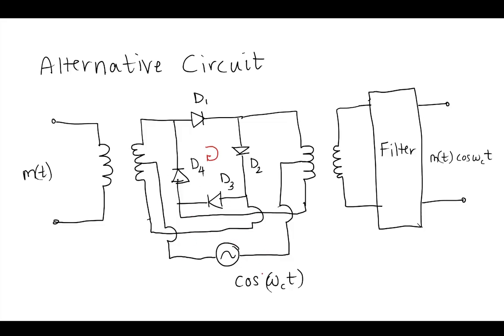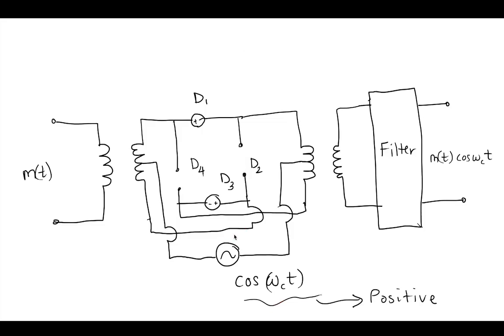But in this case as well, just like in the diode bridge modulator, these diodes are controlled by a cosine omega ct. And this is where our carrier frequency is introduced by turning these diodes into reverse and forward bias.